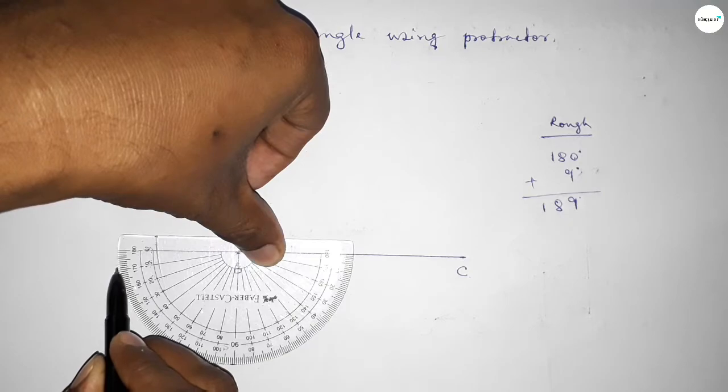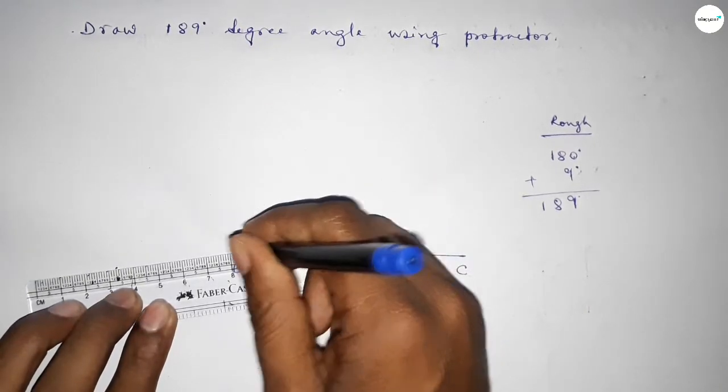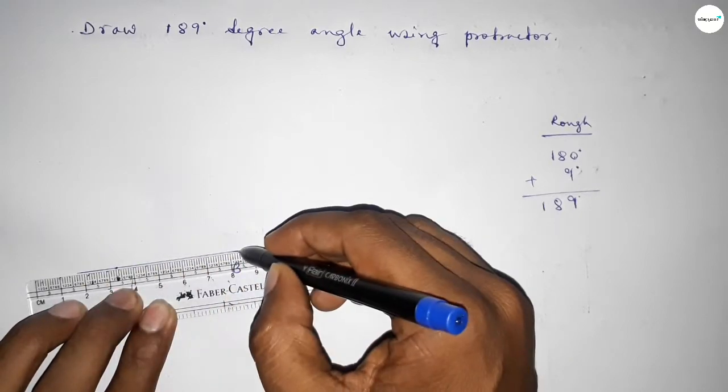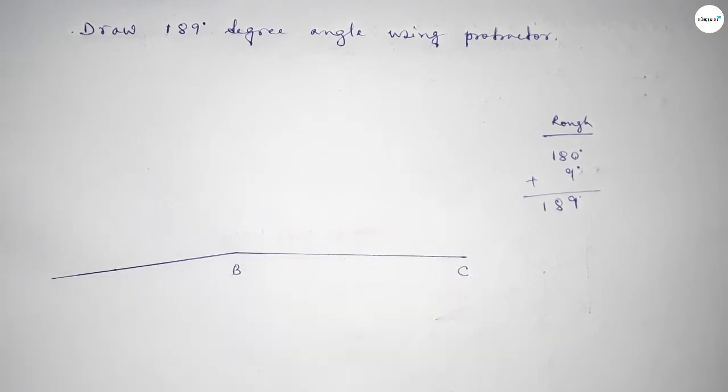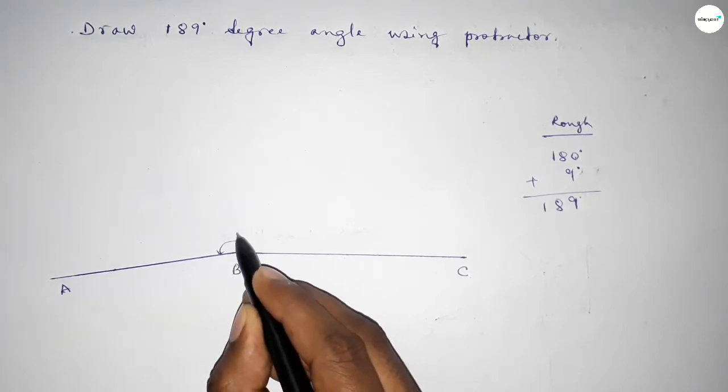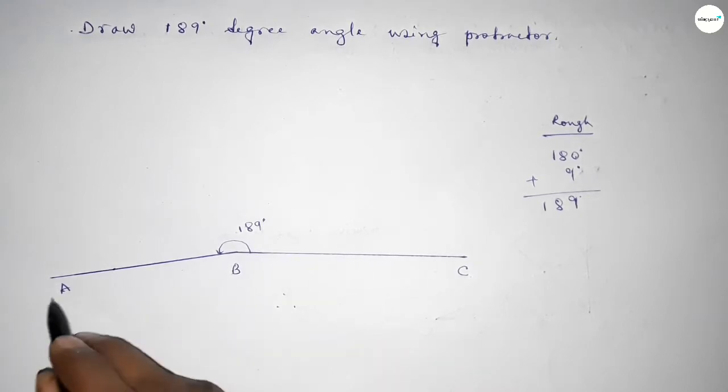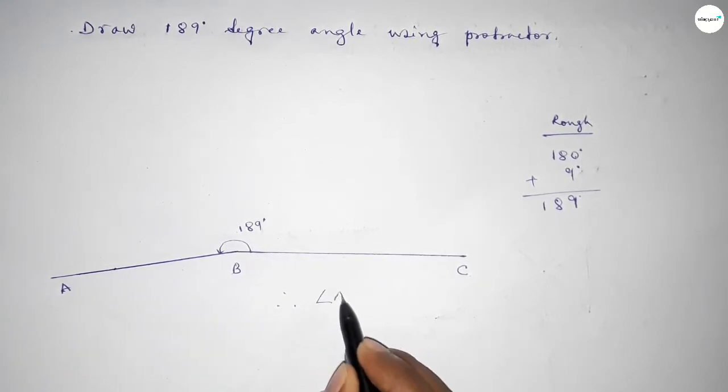So now joining this and taking here point A. So angle ABC up to this, this is 189 degree angle. So therefore angle ABC equal to 189 degrees.